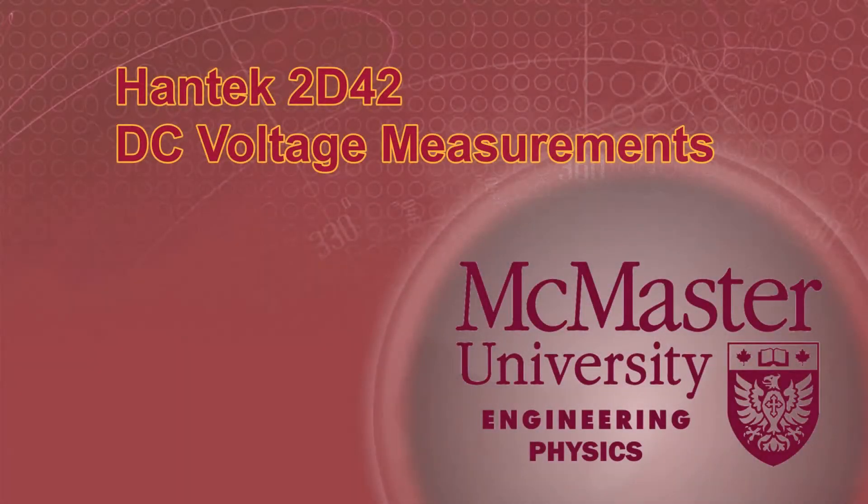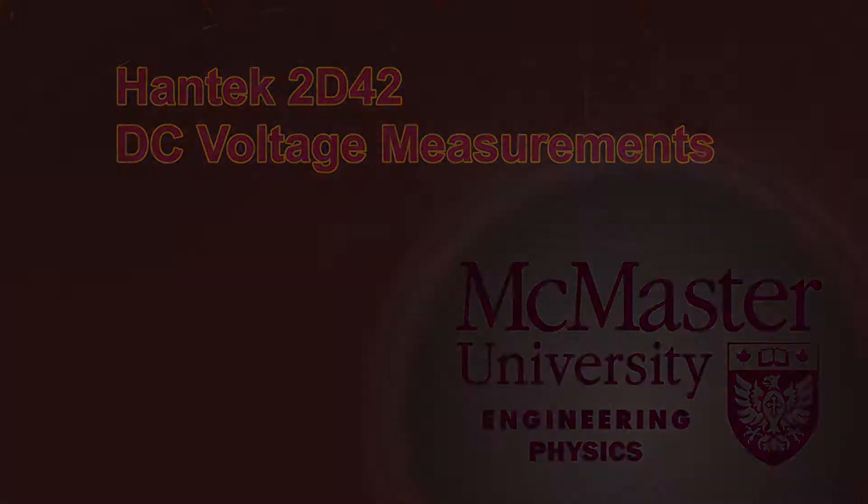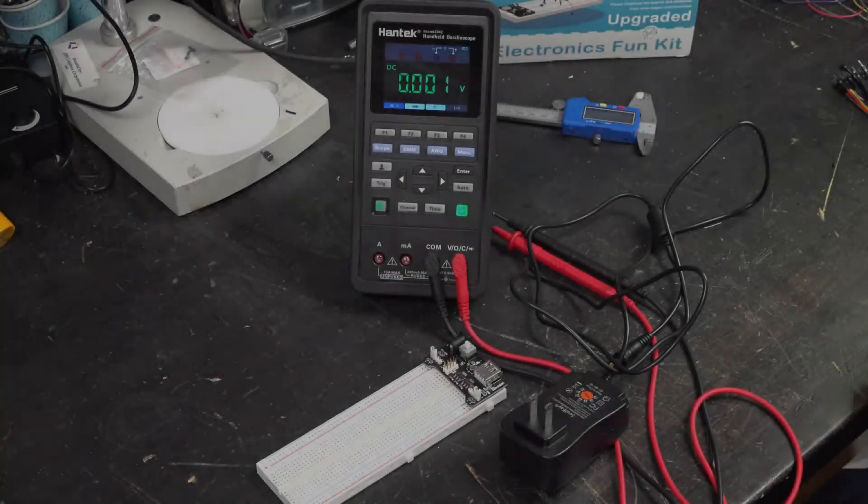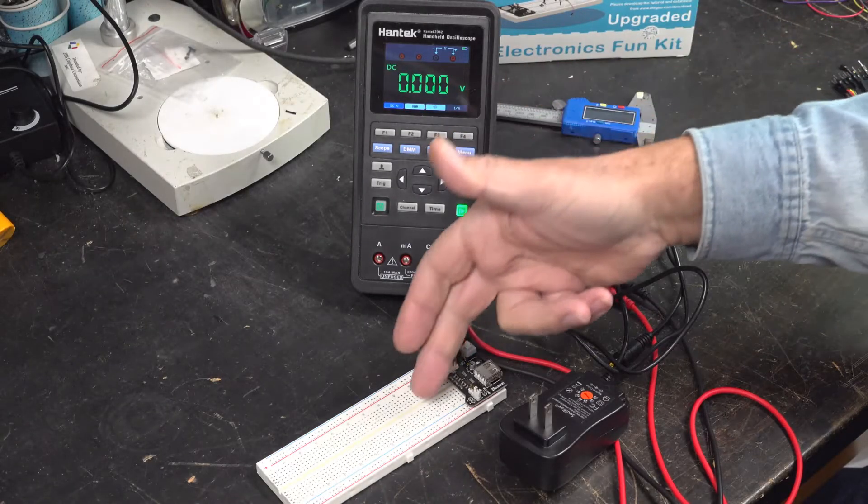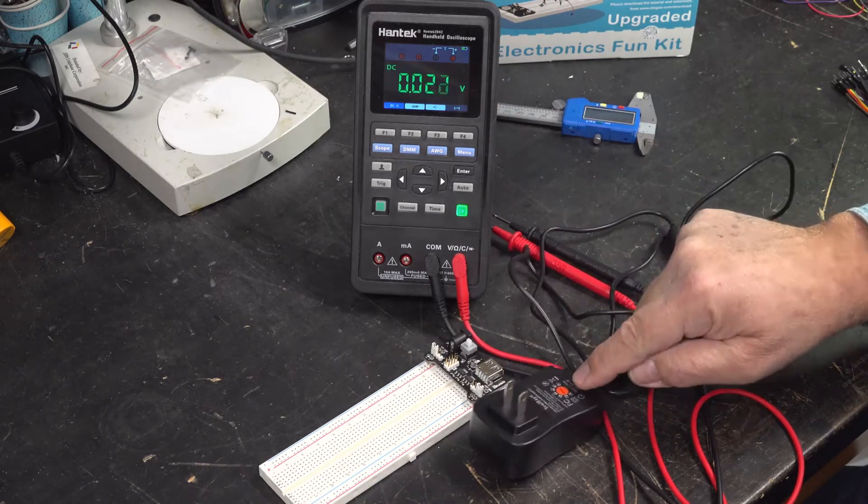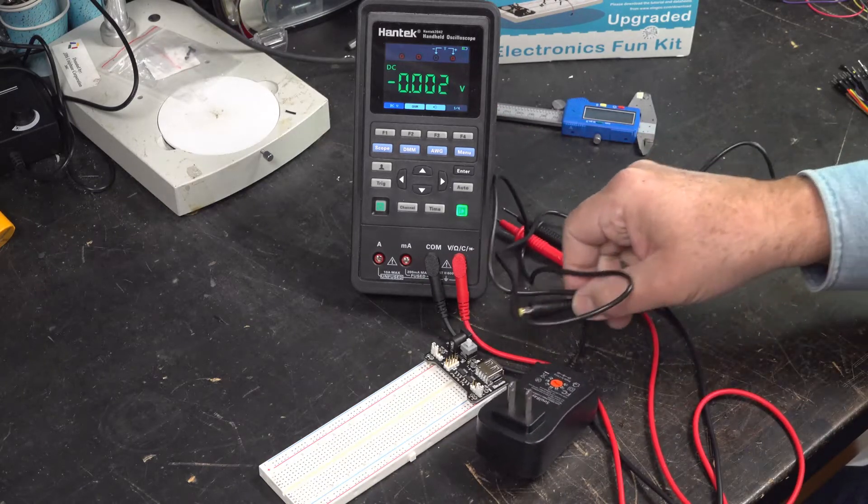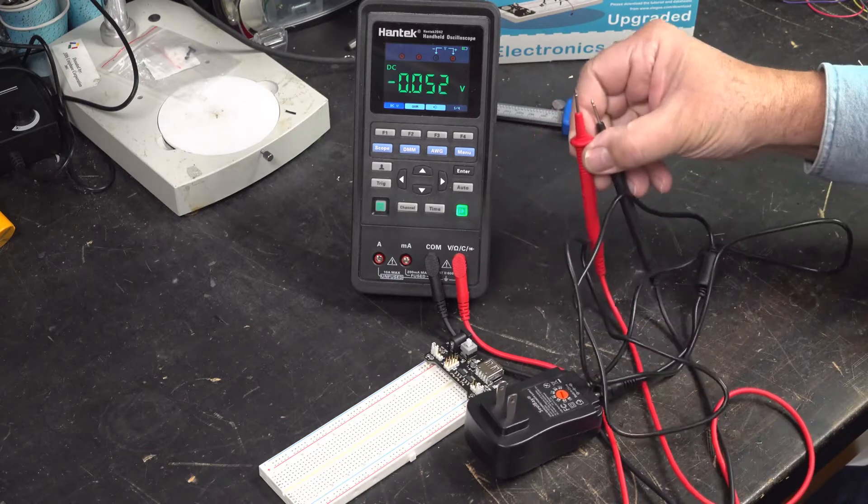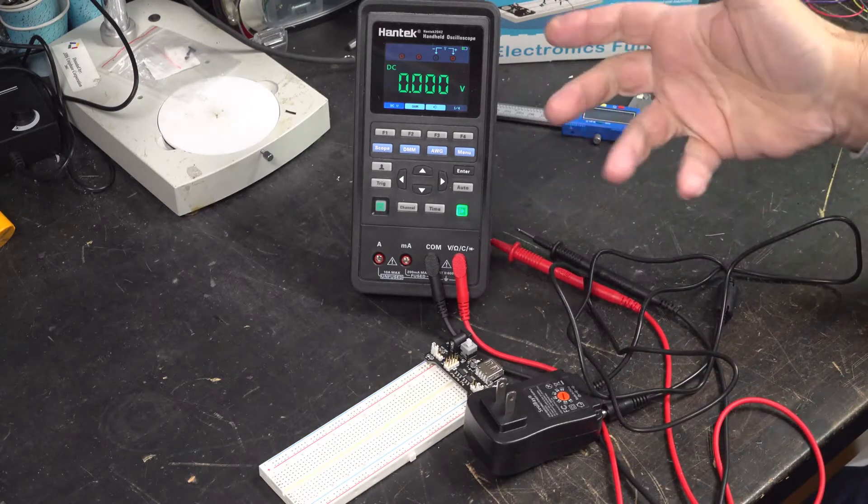Today we're going to be using the Hantec 2D42 for DC voltage measurements. Alright, this is the equipment we're going to be using. Obviously the Hantec, a breadboard and a header board, the Solbay power supply, which we'll be adjusting to plug into the header board, and a couple of test leads that are hooked up to the Hantec.